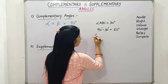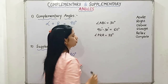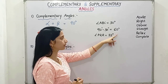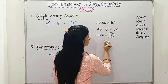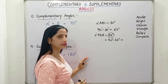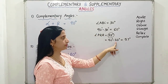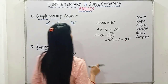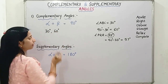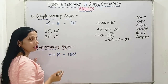Similarly, take any other example. For example, angle PQR is 33 degrees and you have to find out the complementary angle of this. To find out that angle, you will subtract this from 90 degrees. So 90 minus 33 degrees, we will get 57 degrees. So this means we can say that 30 degrees and 60 degrees are complementary angles, and 33 degrees and 57 degrees are also complementary angles.